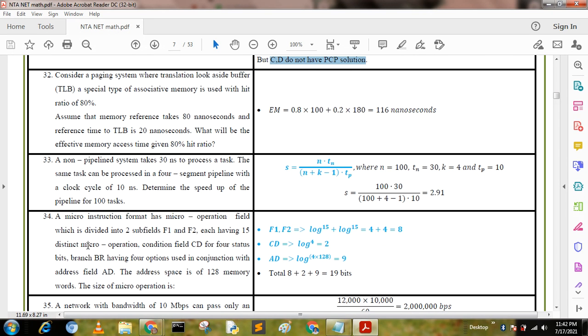A microinstruction format has a microoperation field divided into two subfields F1 and F2, each having 15 distinct microoperations, a condition field CD for four status bits, and a branch field BR having four options used in conjunction with address field AD. The address space is 128 memory locations. What's the size of the microinstruction? We get: log(15) + log(15) = 4 + 4 = 8. CD with four status bits: log(4) = 2. AD with 128 memory: log(128) = 7. Total: 8 + 2 + 7 = 17 bits.